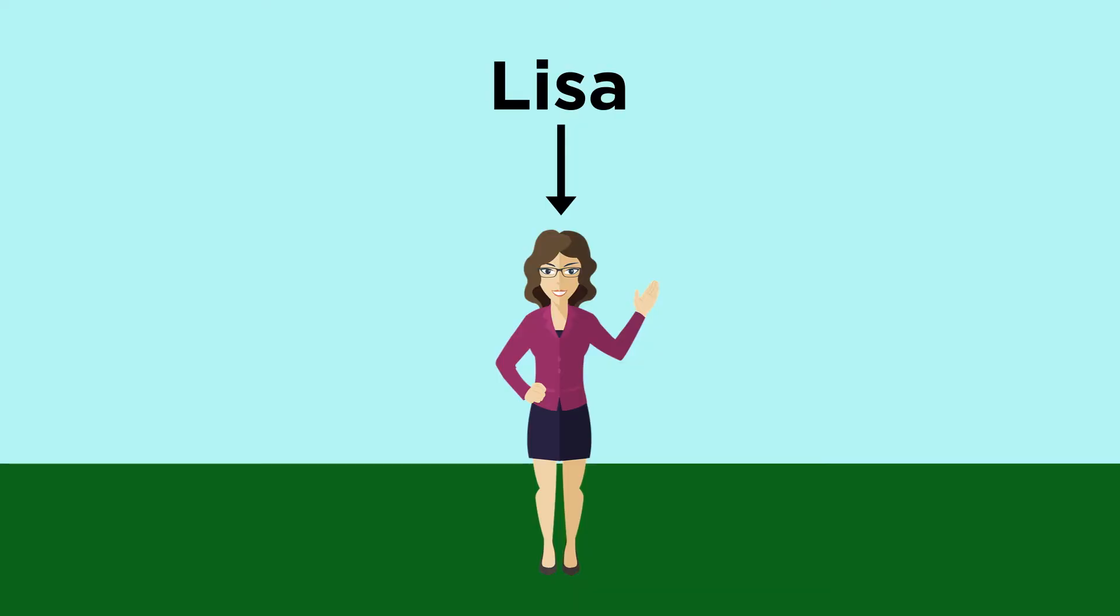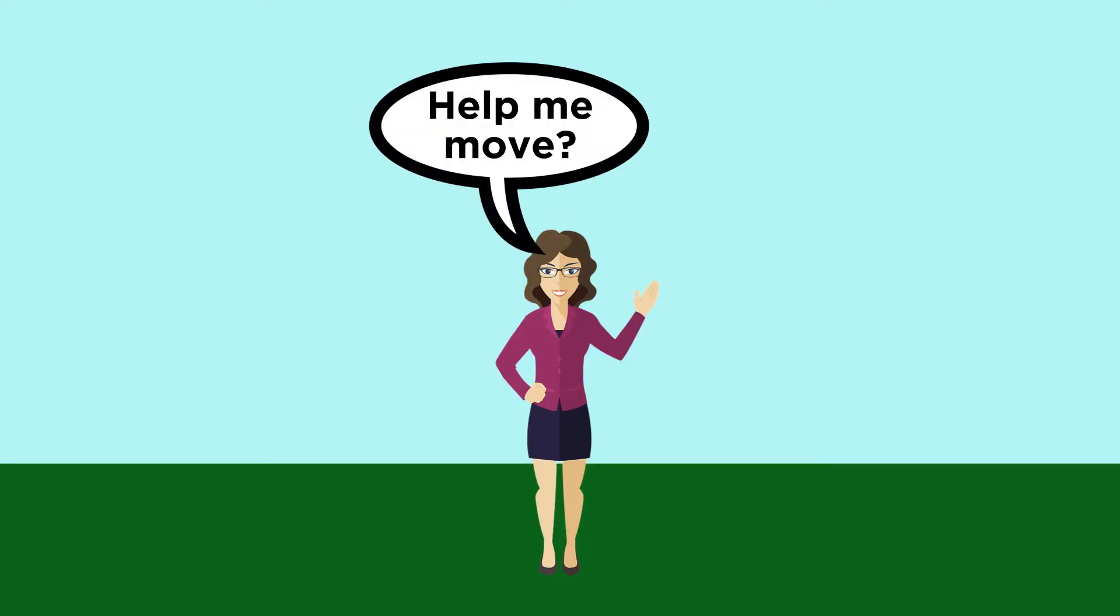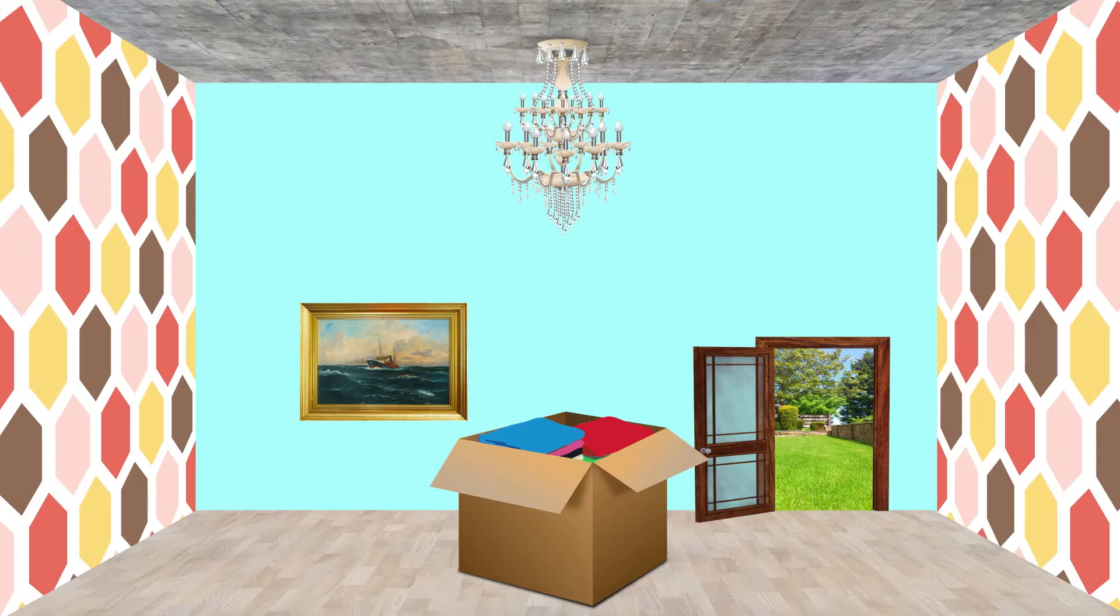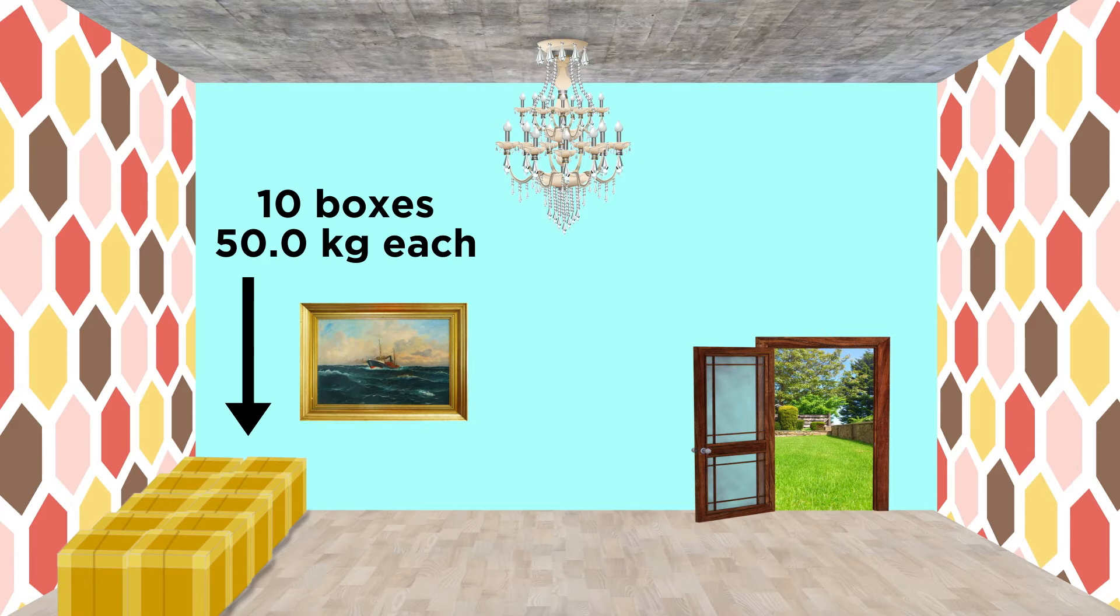In this problem, you are helping your friend Lisa move out of her apartment. Despite your advice, she packed up huge boxes all the way to the top so that they are impossible to pick up, which means you will have to push them across the floor. There are ten boxes, each with a mass of fifty kilograms, and you have to push them across a room with a length of ten meters over to the door.